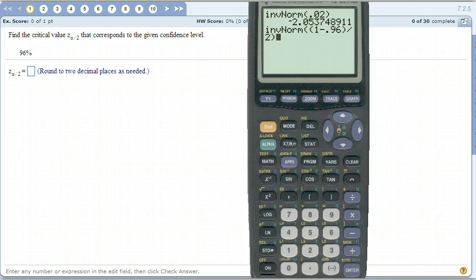There's the division by 2. Alpha is 1 minus this number. So 1 minus 0.96. This right here is alpha. And then alpha over 2. Divide by 2. And then when you hit enter, it's going to give us the same thing that it gave us before.